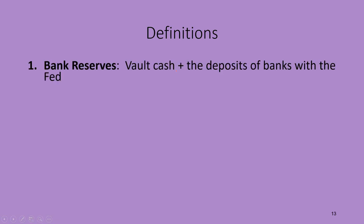Let's talk about a few definitions before discussing how banks create money. Bank reserves include the amount of money a bank has on hand in their vaults — vault cash — plus the deposits that banks have with the Federal Reserve system. The Federal Reserve is like the bank for commercial banks. In the same way you have money stored at Bank of America, Bank of America has deposits with the Federal Reserve. So the amount of money Bank of America has in its vaults plus what it has deposited with the Fed is the total bank reserves that Bank of America has on hand.